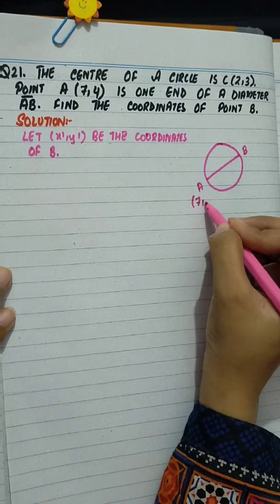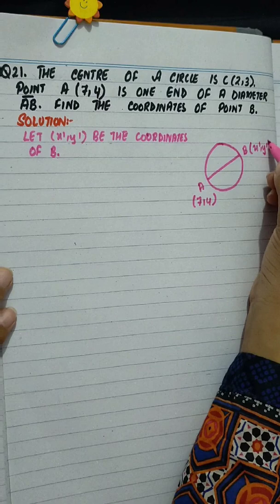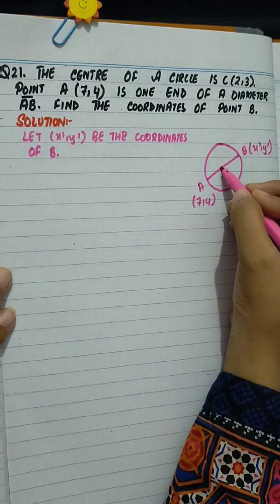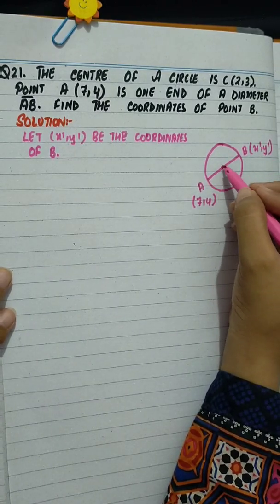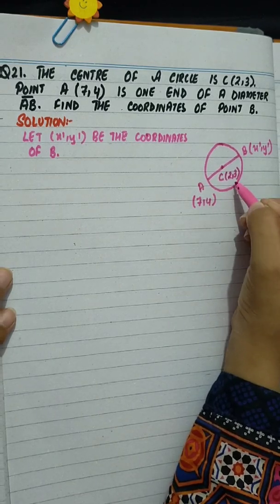A point is 7 comma 4 and B is unknown and we have to find. Midpoint is the given point, the circle's center C, 2 comma 3.